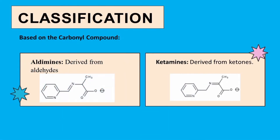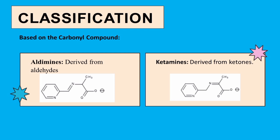Classification of Schiff bases is based on the carbonyl compounds used. Schiff bases derived from aldehydes are known as aldimines, while those derived from ketones are known as ketimines, as is clear from their structures.